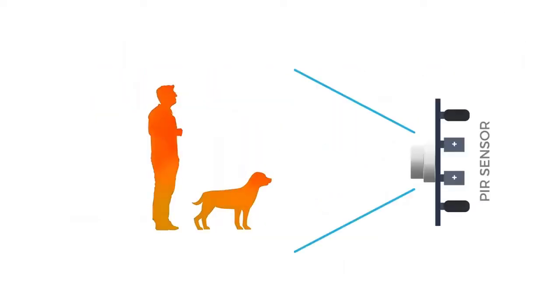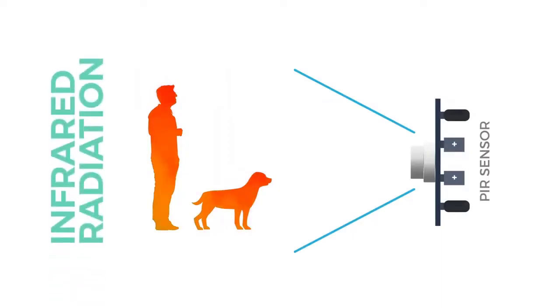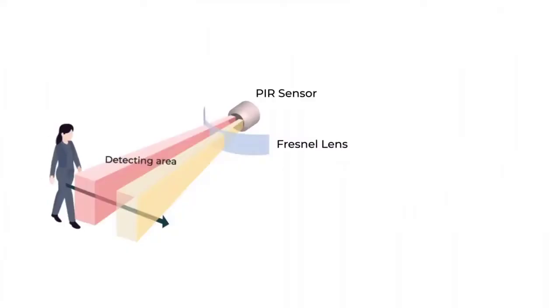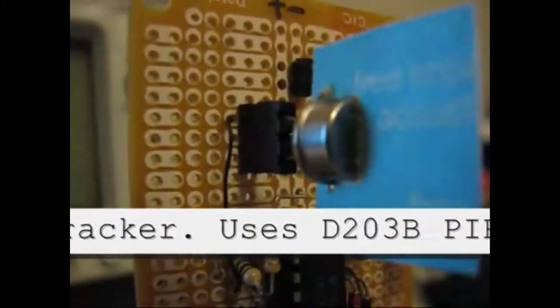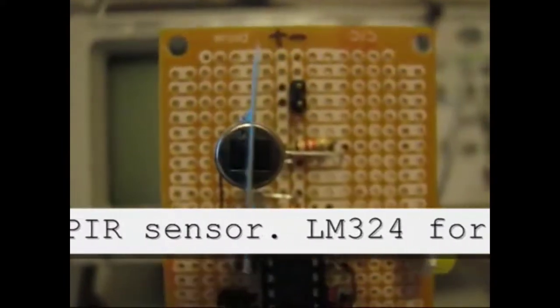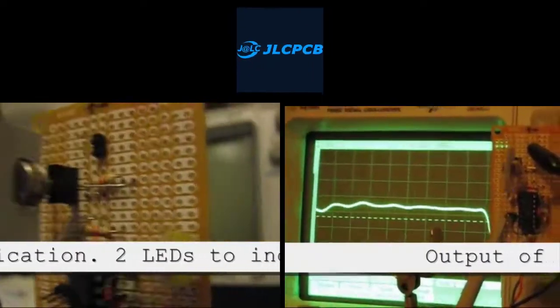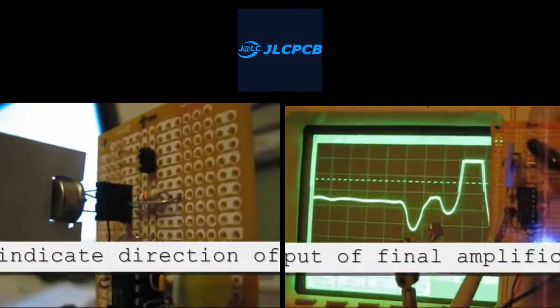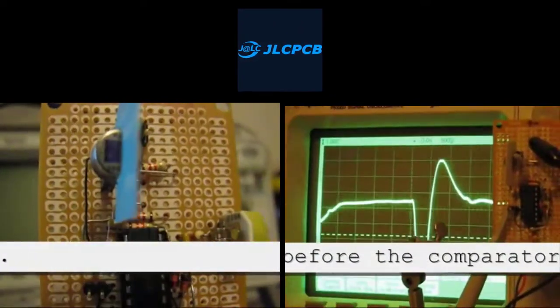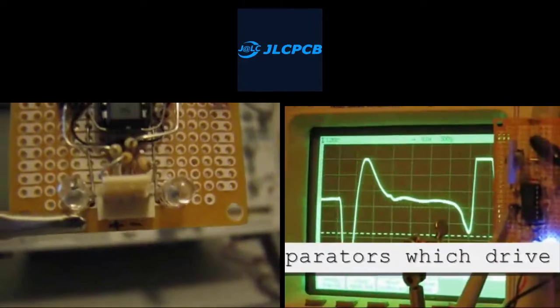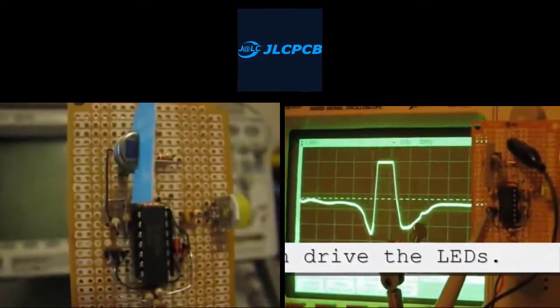All living beings emit infrared radiation to their surroundings — the warmer the object, the more infrared emission. The passive infrared sensor is a thermal infrared sensor that detects the motion of objects by these infrared radiations. The sensor has two or more equal slots made of pyroelectric material that is very sensitive to infrared. When there are no objects in the sensor range, both slots sense the same amount of infrared radiation. When a warm body comes in range, it passes through both slots one after the other.